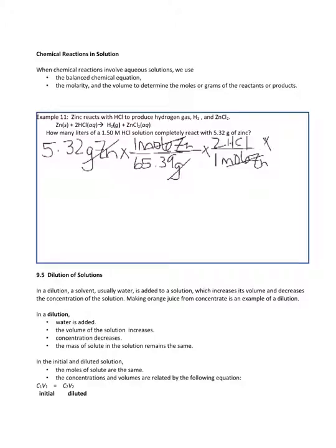You can't measure moles of HCl in a graduated cylinder — you need liters. The concentration of 1.5 molar tells us there are 1.50 moles per liter, which lets us cancel moles of HCl and get liters. Entering into the calculator: 5.32 ÷ 65.39 × 2 ÷ 1.50 = 0.108 liters of the solution.